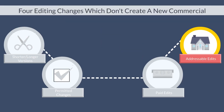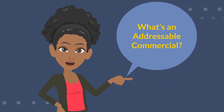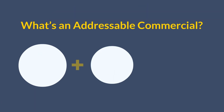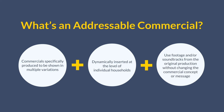Now for the last editing type: addressable edits. Commercials can be edited to create addressable campaigns with the payment of an addressable edit fee. You may be asking, what's an addressable commercial? Addressable commercials are specifically produced to be shown in multiple variations and are dynamically inserted at the level of individual households. They also use footage and/or soundtracks from the original production, as long as the edit doesn't change the commercial concept or message.